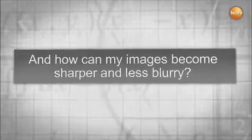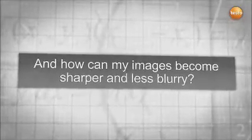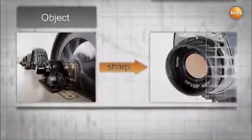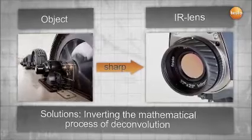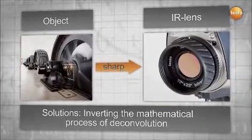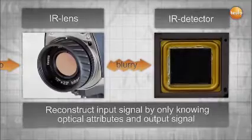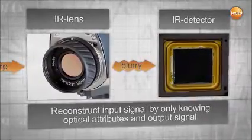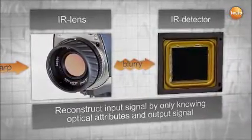Another challenge is to get clear and sharp pictures out of your measurements. With the help of deconvolution, we are able to reconstruct the input signal by recalculating the output signal with the optical attributes of the lens. Your images are therefore less blurry and sharper.